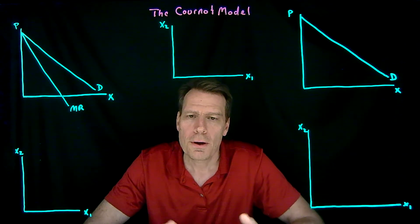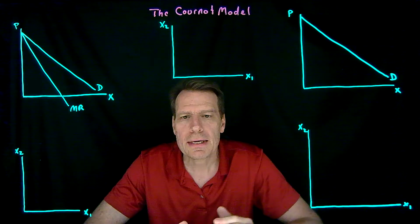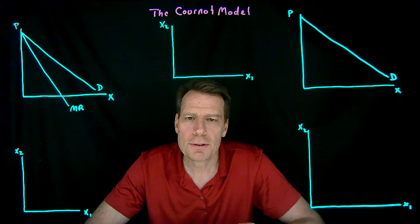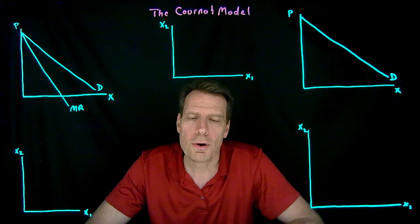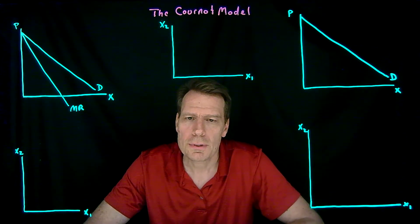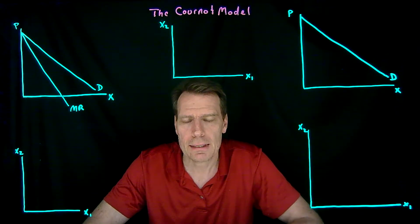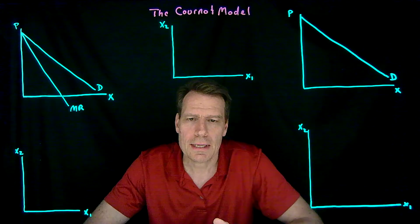In the Bertrand model, firms set their price and then they sell whatever they can at that price, so price is their strategic variable. In the Cournot model, firms decide how much to produce and then sell what they've produced at whatever price they can get, so quantity is their strategic variable.